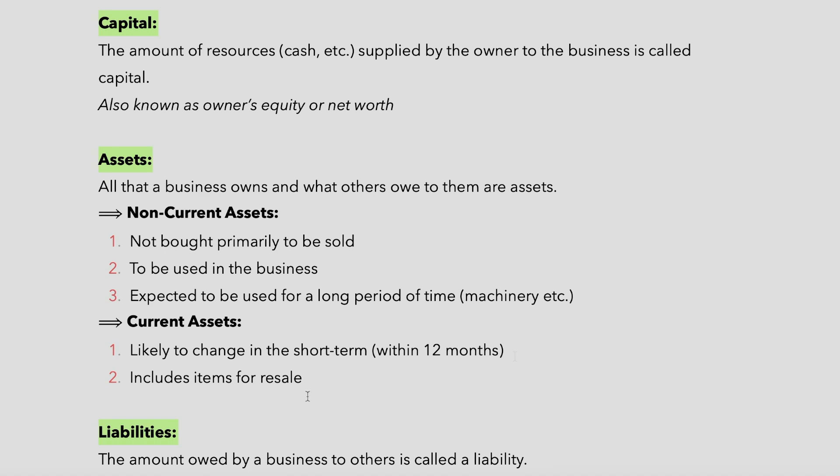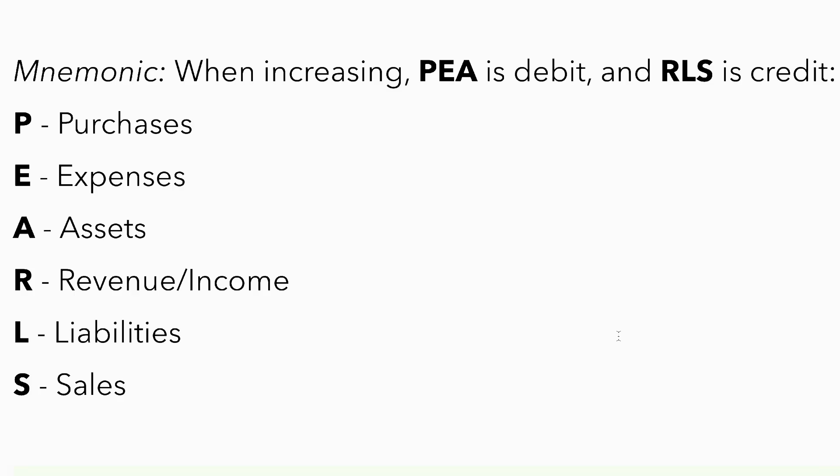Now that we've looked at assets, let's move on to liabilities. Liabilities are the amounts owed by a business to others — meaning the business has a debt and owes someone else money. That is a liability.